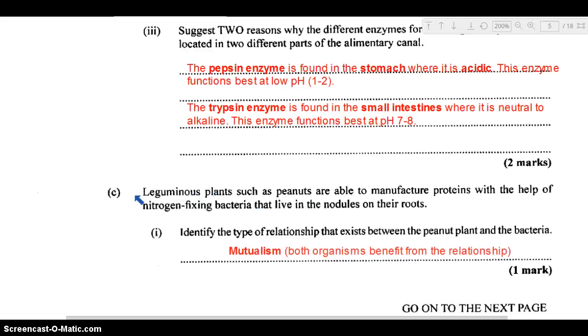Part C: Leguminous plants such as peanuts are able to manufacture proteins with the help of nitrogen-fixing bacteria that live in the nodules on their roots. Part one: identify the type of relationship that exists between the peanut plant and the bacteria. We're looking at symbiotic relationships. There's mutualism, commensalism, and parasitism. This relationship between the peanut plant and the bacteria would be mutualism, where both organisms are benefiting from the relationship.